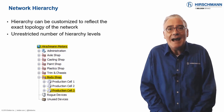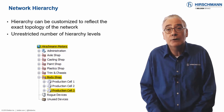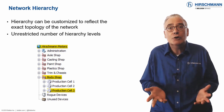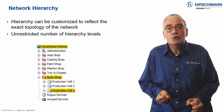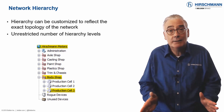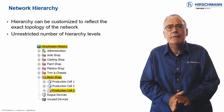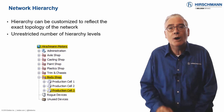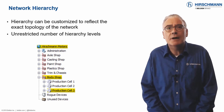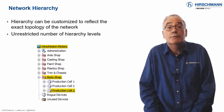The display is active, so it also represents the status of the network components. The status is propagated up the tree, which means the tree does not need to be permanently expanded. The status of a higher level will always depict the worst case status of a lower level, so you will never need to waste time searching for a network fault.